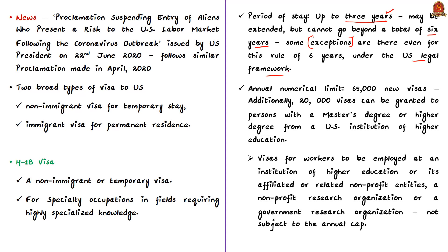The H-1B classification has an annual numerical cap of 65,000 new visas. In addition, 20,000 persons with a master's degree or higher from a US institution of higher education can also be granted this visa. Some H-1B visa holders are exempted from this numerical cap — workers employed at institutions of higher education or affiliated non-profit entities, workers in non-profit research organizations, or government research organizations. This means H-1B visas issued for research in such institutions are not counted in the annual limit.